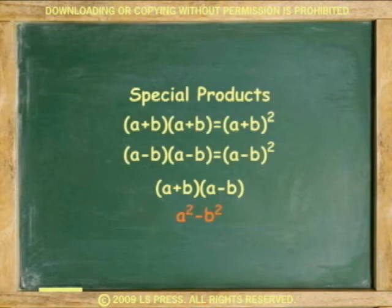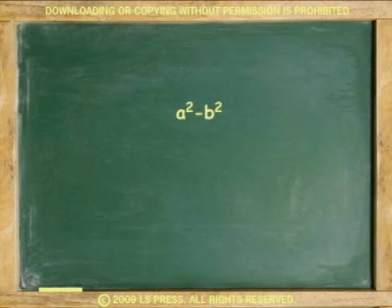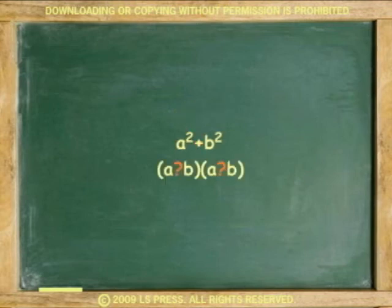Because the negative AB and positive AB cancel out, this particular special product is called the difference of two squares. It is important to know that the opposite, which is the sum of two squares — A squared plus B squared — cannot be the product of any multiplication.